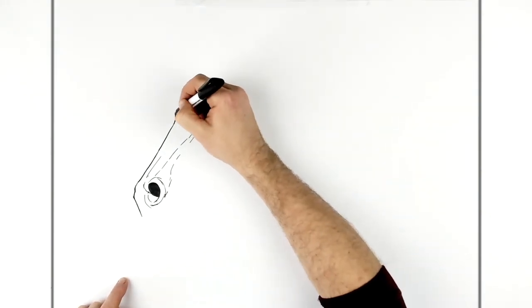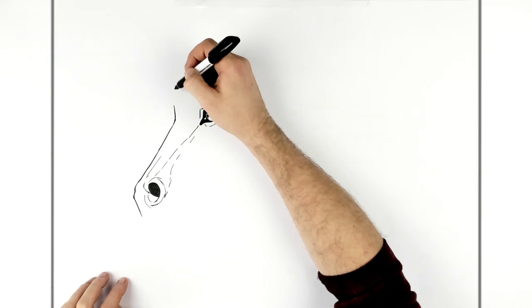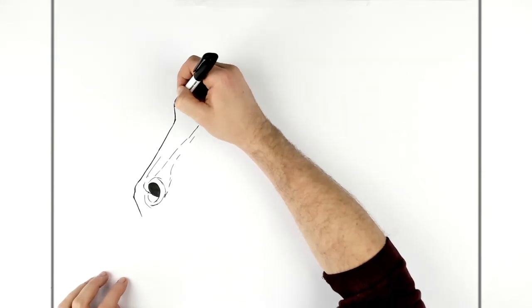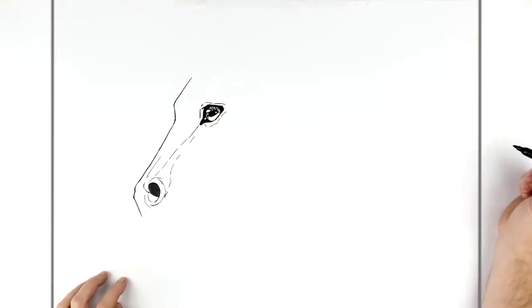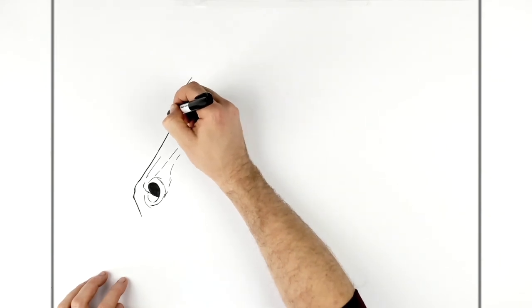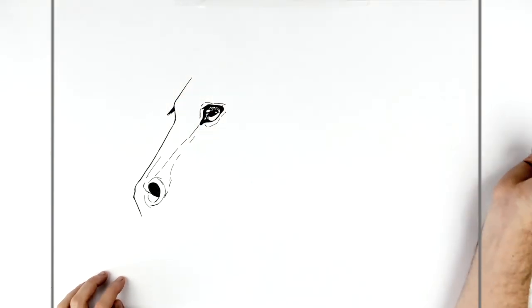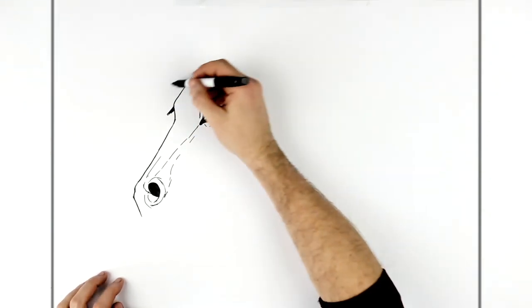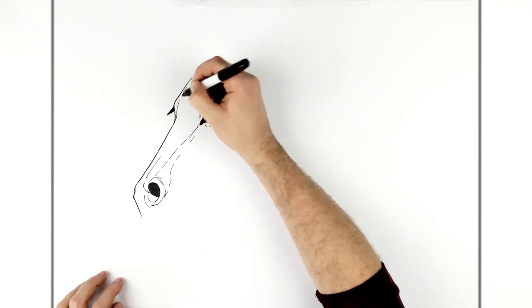And then we go up around the other eye line and then up towards the hair. And we can stick some eyelashes off here as well. Maybe like a brow line, just like a bumping sort of brow line there.